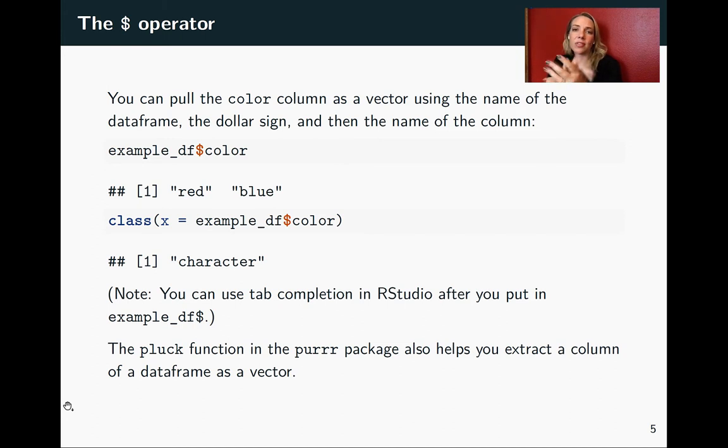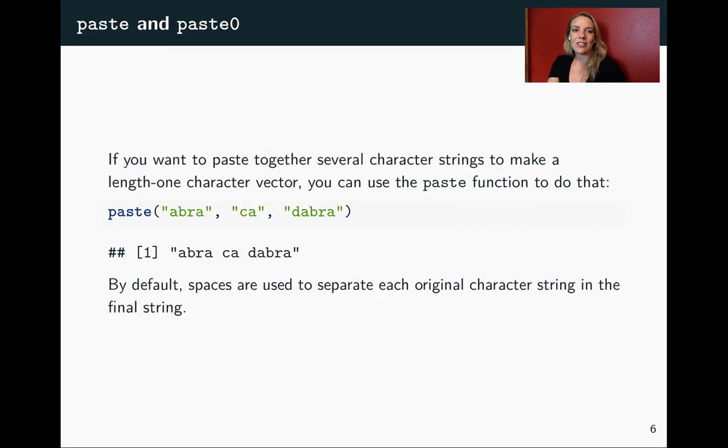As a note, there are also some functions in the tidyverse for doing this. One example is the pluck function from purrr, and there's also a pull function from dplyr that will let you extract a single column and switch it back into the vector class instead of having a one-column data frame.